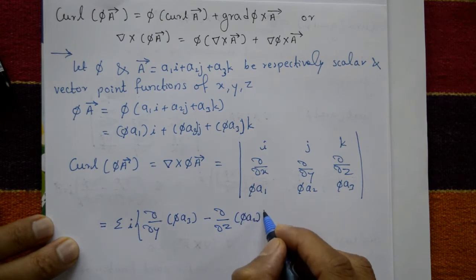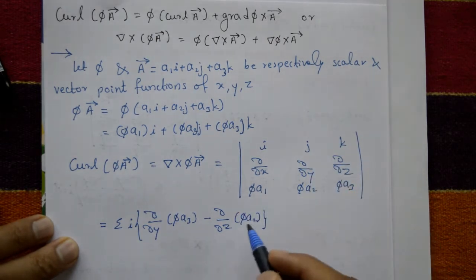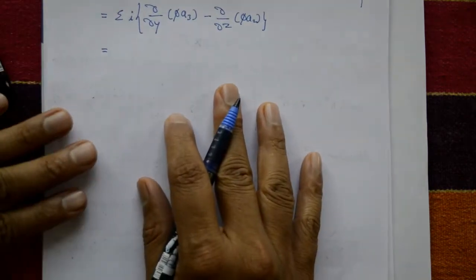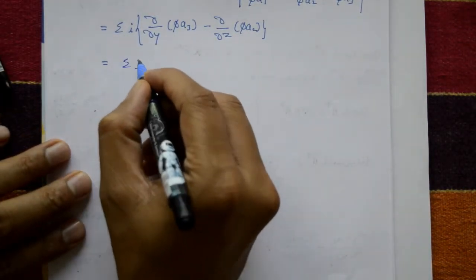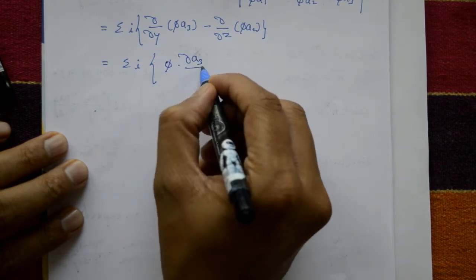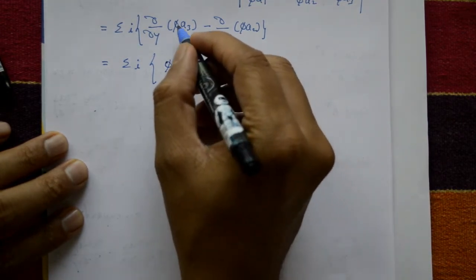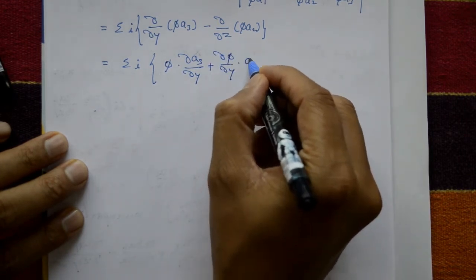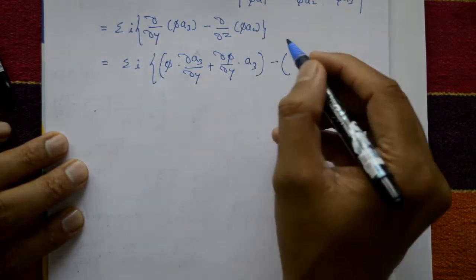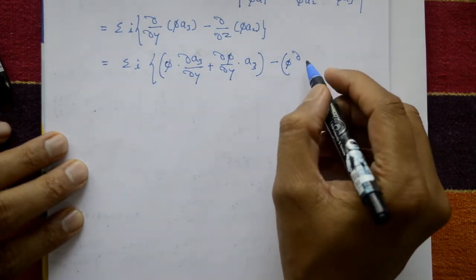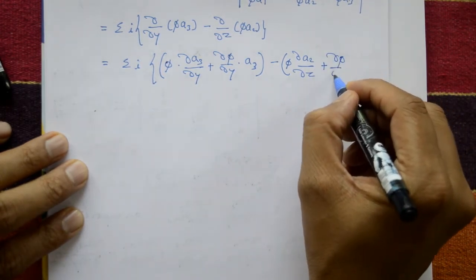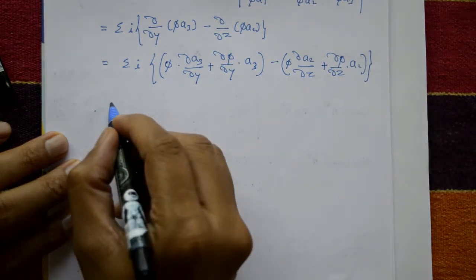Taking only the i-component term and applying the product rule: summation i times [(φ·∂a3/∂y + ∂φ/∂y·a3) minus (φ·∂a2/∂z + ∂φ/∂z·a2)]. The j and k components follow similarly.